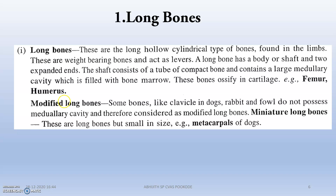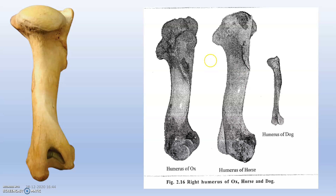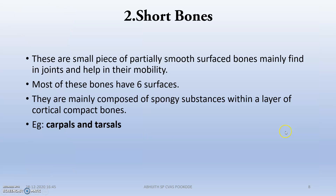There are also modified long bones. Some long bones, like the clavicle in ox, rabbit, and fowl, do not have a medullary cavity and are considered modified long bones. Another example is the metacarpals of the dog. This image shows the humerus of ox, horse, and dog.